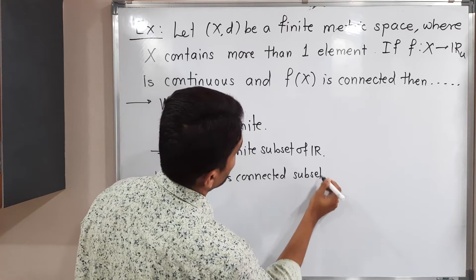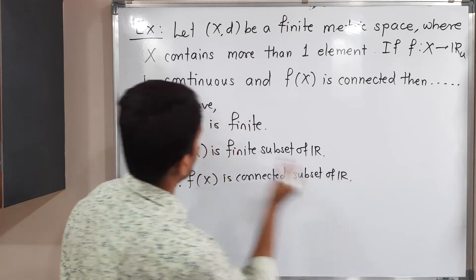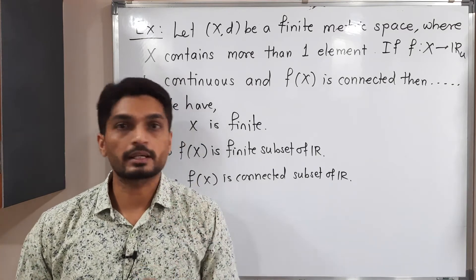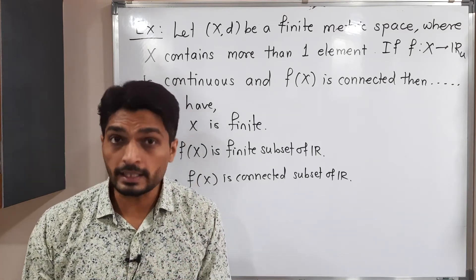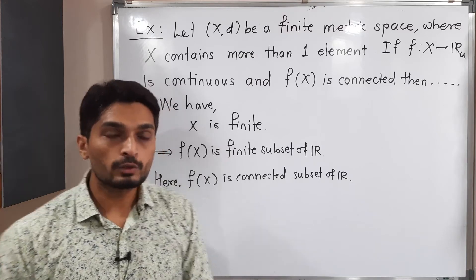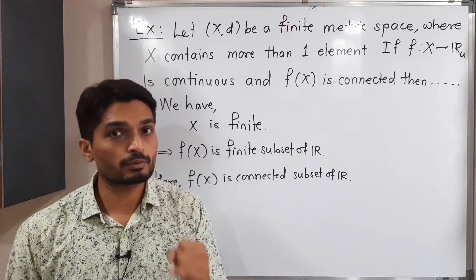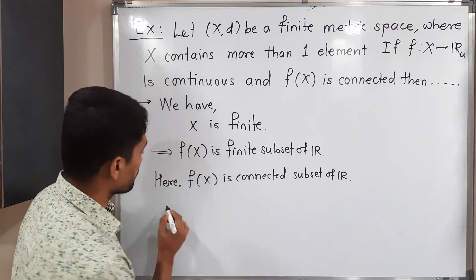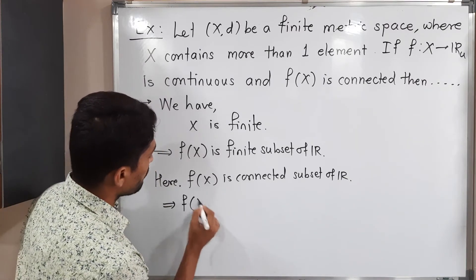Here f(X) is a connected subset of ℝ. I should mention connected subset of ℝ since it is a subset of ℝ. In ℝ there are only two types of sets that are connected: first, either it is an interval, or second, it is a singleton set. So it is a connected subset of ℝ. That's why either it is a singleton set or it is an interval. Let me mention that: f(X) is a singleton set or it is an interval.